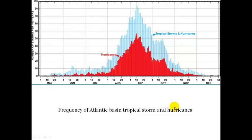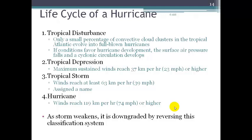The life cycle of a hurricane begins with something called a tropical disturbance. This is a little ridge of low pressure that allows for the beginnings of some organization of cumulonimbus clouds around a low pressure cell. And then if conditions are favorable, this tropical disturbance can grow into what's called a tropical depression.